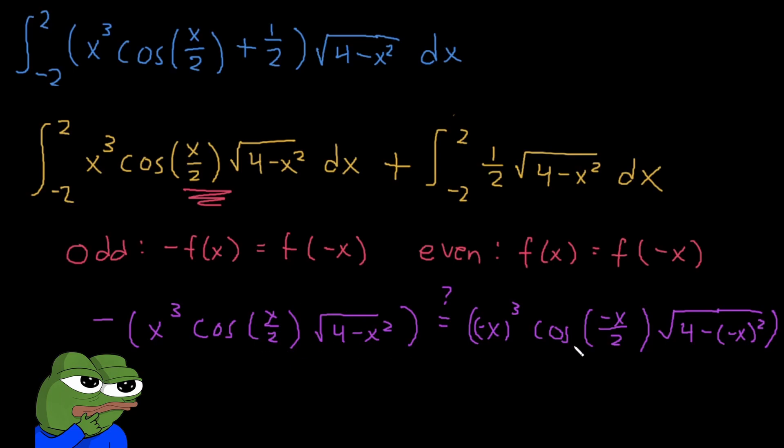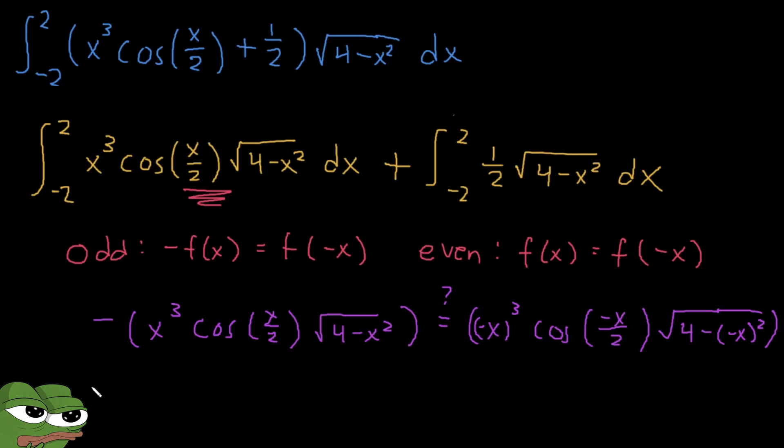Are these two sides of equations the same? If you do some basic algebra you'll find that they actually are the same. So for example, this left hand side we can expand it out. Let's just remove these parentheses and it will be negative x cubed of cosine x over 2, the root of 4 minus x squared.